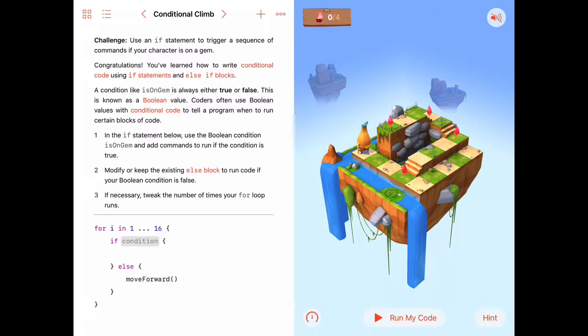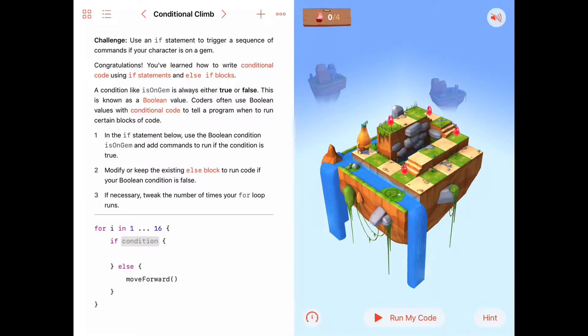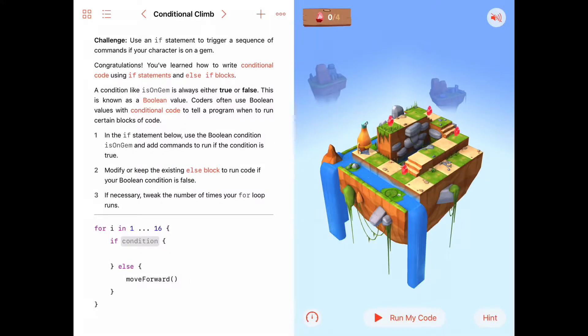Conditional statements like if statements in Swift will do different commands depending on whether the Boolean value, the condition, is true or false. If the condition's true, they'll do one set of commands. Else, or otherwise, if it's not true, they'll do another set of commands. Those sets of commands can either be a single command or it can be a block of two or more commands contained in a set of curly braces.